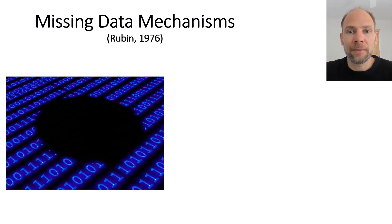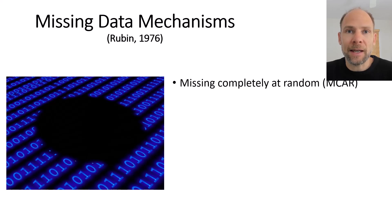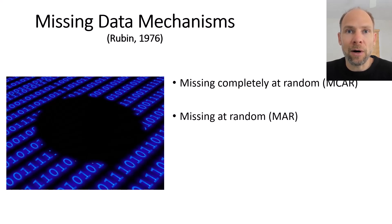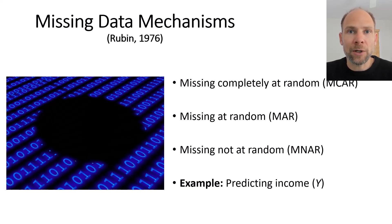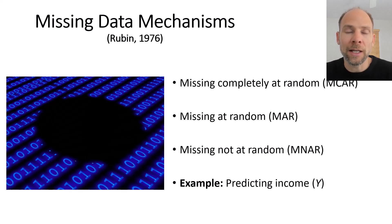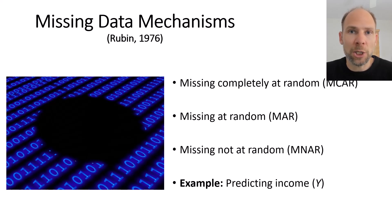What are the missing data mechanisms that can be distinguished according to Rubin's work? First is missing completely at random, or MCAR. Second is missing at random, or MAR. And finally we have missing not at random, or MNAR. I want to go through each one based on an example — a study in which we wish to predict income using multiple regression, path analysis, or structural equation modeling, with profession, gender, age, and other variables as predictors.